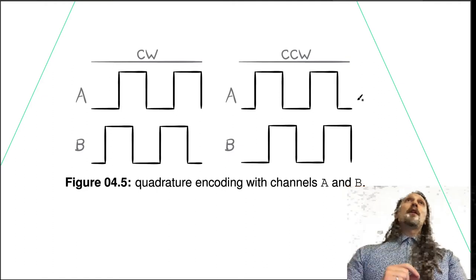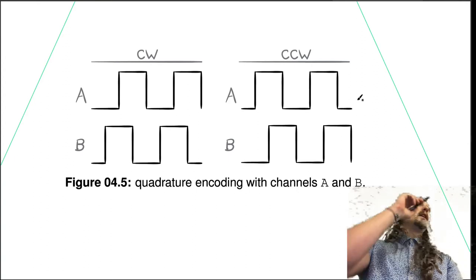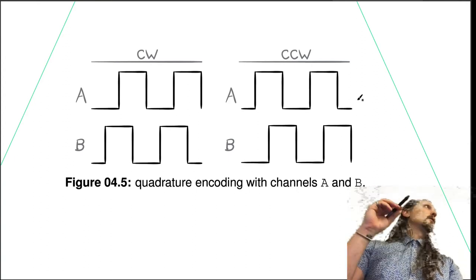That's how we keep track of where the motor shaft is—via quadrature encoders. This is one of the best ways to determine the position of things in a mechanical system.